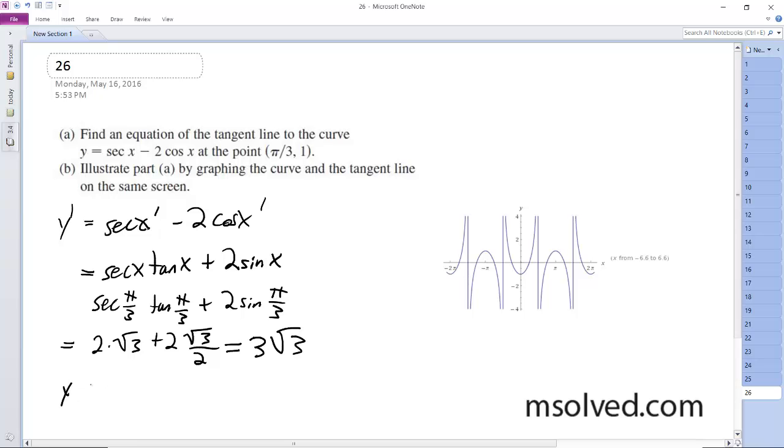So we plug us into the point slope form, we get y minus 1 is equal to 3 root 3, x minus π/3.